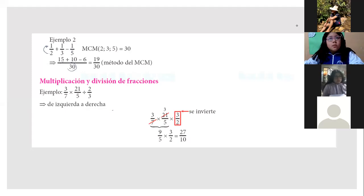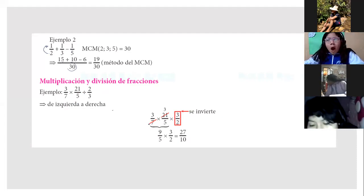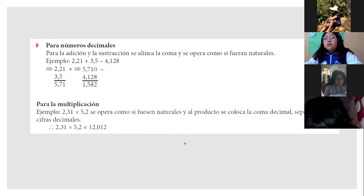Acá dice multiplicación y división de fracciones. En el caso de la multiplicación, simplemente de izquierda a derecha multiplicamos. Y en el caso de la división, se invierte. Entonces, multiplicamos, pero por 3 medios. Sería 3 séptimos por 21 por 3 medios. Sacamos séptima, 1, séptima 3. Y lo único que queda acá sería multiplicar, 3 por 3 por 3, 27, 5 por 2, 10. Y ahí está, 27 décimos. De esa forma, hacemos multiplicación y división.